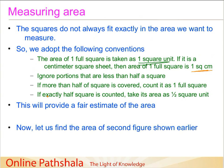If there are any portions covered by the figure that are less than half of a square, we just ignore them. If more than half of a square is covered, we count it as one full square. And if exactly half of a square is covered, we take its area as half a square unit. This provides a fair estimate of the area, since in many situations you may not be able to get an exact area.